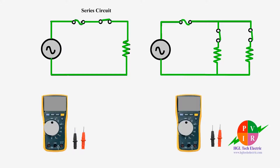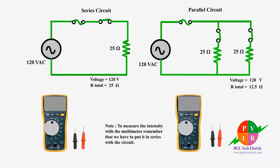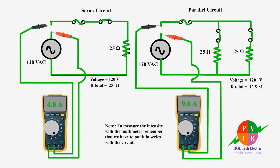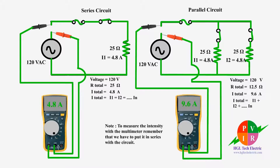Let's look at these two circuits. One is a series circuit and the other is a parallel circuit. If we measure the current in both circuits, these are the values. You can pause the video now and calculate these values using Ohm's law.